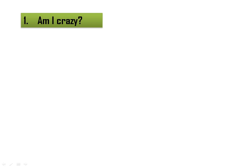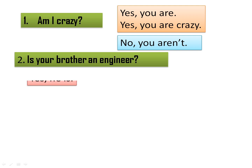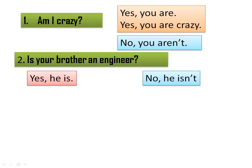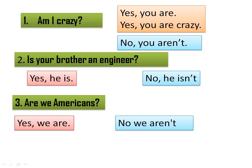When you ask a question like 'Am I crazy?', you have two possible answers. Short answer: yes, you are — or no, you aren't. Long answer: yes, you are crazy — or no, you aren't crazy. Is your brother an engineer? Yes, he is. No, he isn't. Or long answer: yes, he is an engineer. No, he isn't an engineer. Are we Americans? Short answer: yes, we are. Long answer: yes, we are Americans — or no, we aren't Americans.